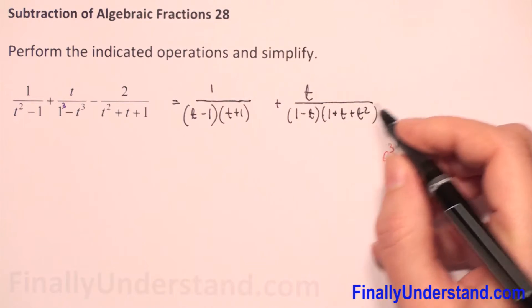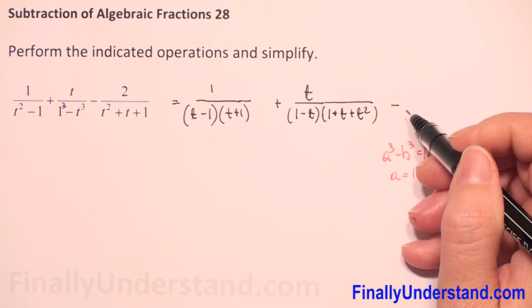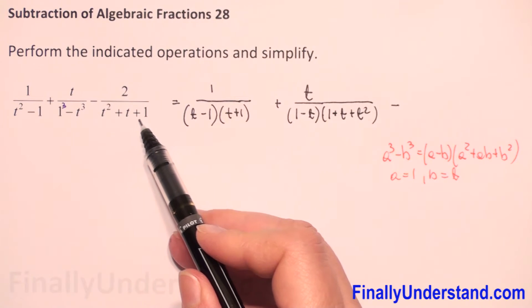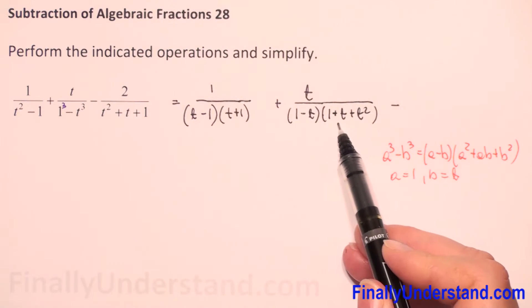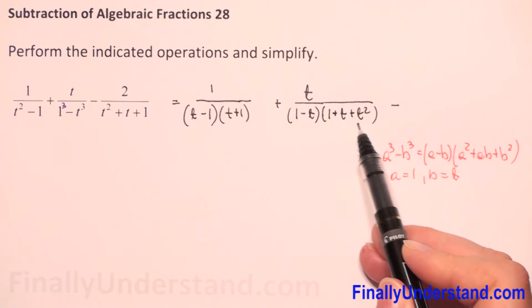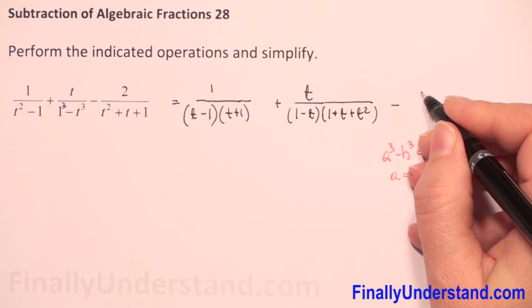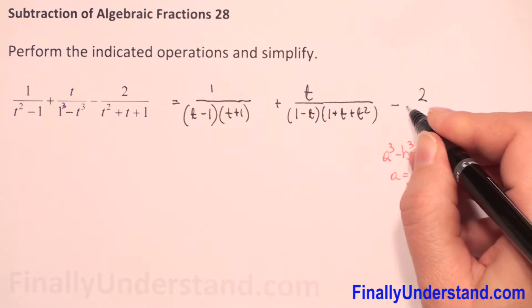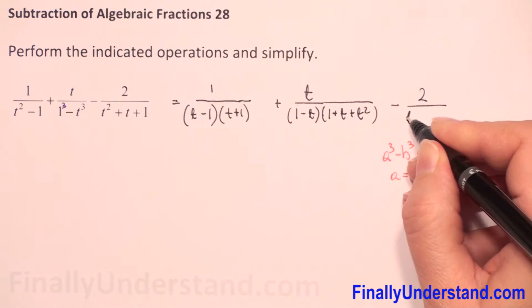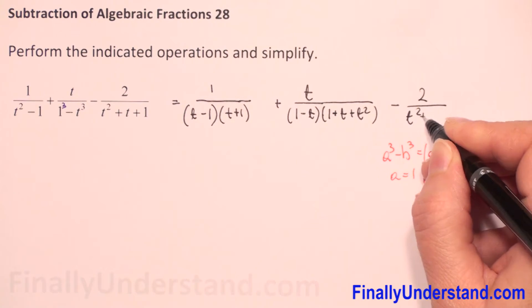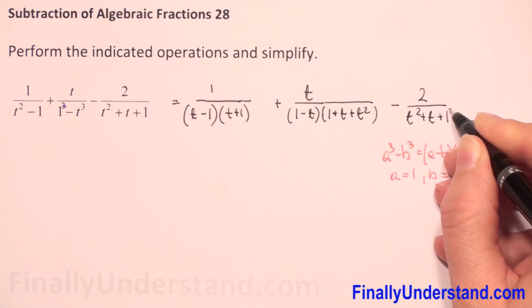And the last term we copy — we see that the numerator matches what we have — so it is minus two over t squared plus t plus one.